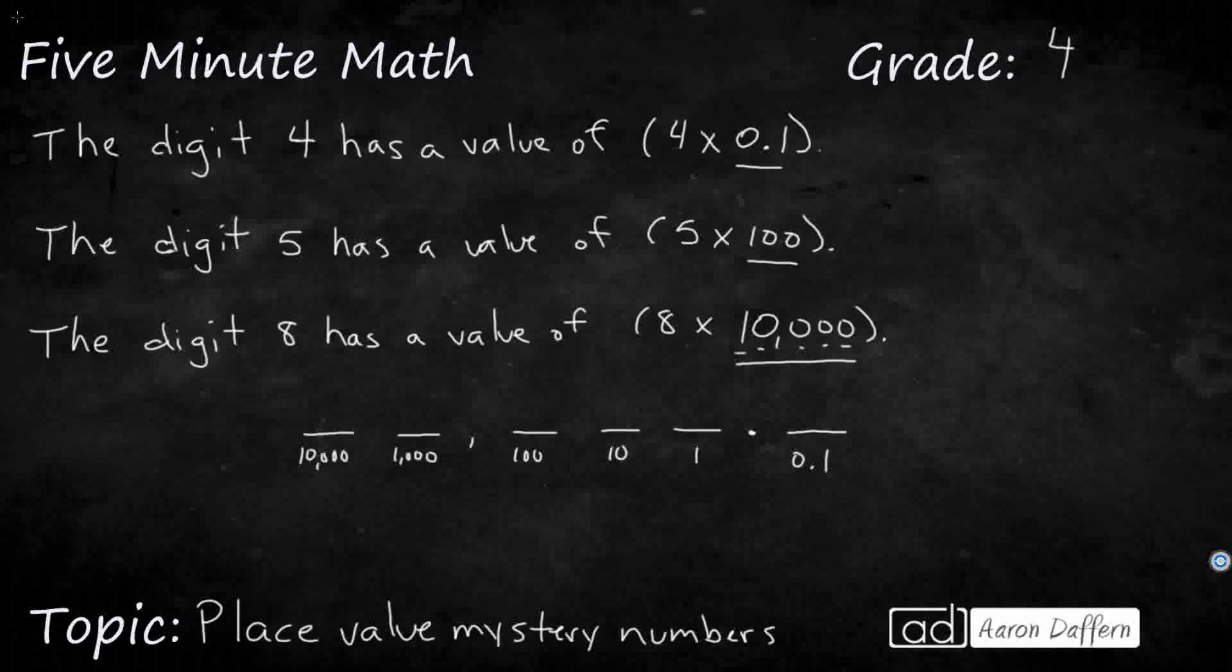So what do I know here? I know that this number is going to have a 4, and it's going to have a value of 4 times 1 tenth. So let's put a 4 right there in the 10th spot, because that's what it's telling us, to put a 4 in the 10th spot. It's also telling us that the digit 5 is a value of 5 times 100, so that means there's a 5 in the 100th spot. And then it's got a value of 8 times 10,000.